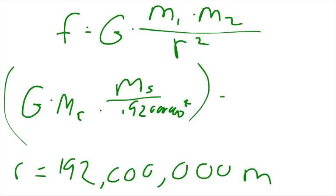And then you would, so you would plug in the mass of the Earth, which is 5.98 times 10 to the 24th. And then you plug in the gravitational constant, which is 6.673 times 10 to the negative 11th.